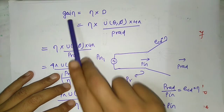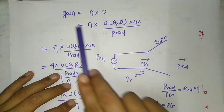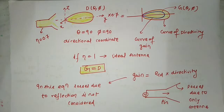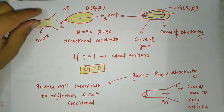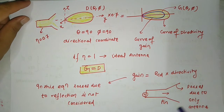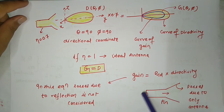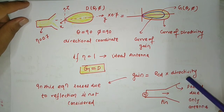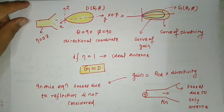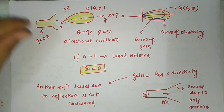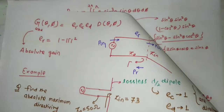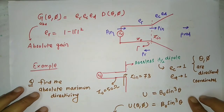If we consider the entire structure, there are three types of losses possible: conductor loss, dielectric loss, and reflection loss.